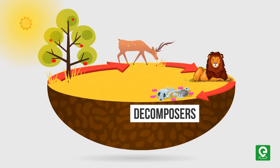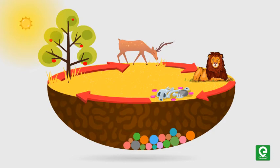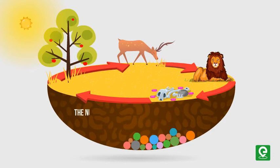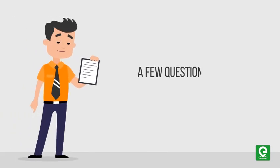Carnivores may include lion, men, and wolf. Besides producers and consumers, there are certain decomposers or detritivores also present in the ecosystem. They meet their energy and nutrient requirements by degrading dead organic matter or detritus — they include fungi and bacteria. The decomposers degrade dead organic matter and separate them into the simplest form, which is collectively called the nutrient pool. These nutrients get mixed into the soil and are absorbed by the plants.